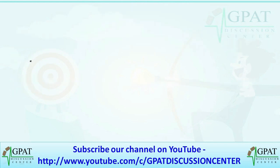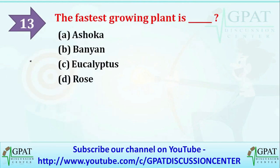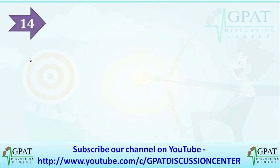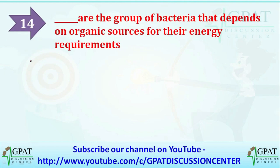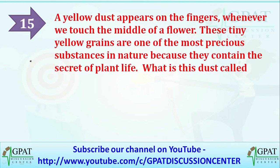The next question: the fastest growing plant — options are Ashoka, Banyan, Eucalyptus, or Rose. The correct answer is Eucalyptus. The following question: which group of bacteria depends on organic sources for their energy requirements? Options are phototrophs, heterotrophs, organotrophs, or chemotrophs. The correct answer is organotrophs.